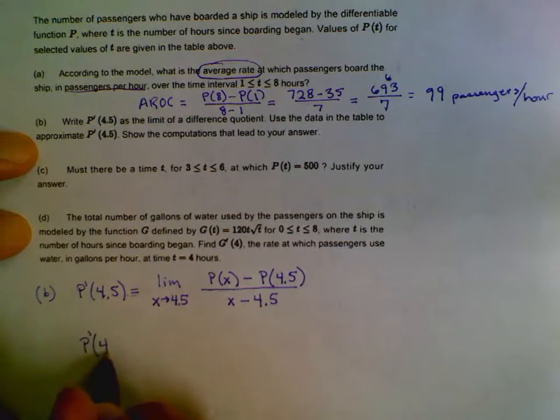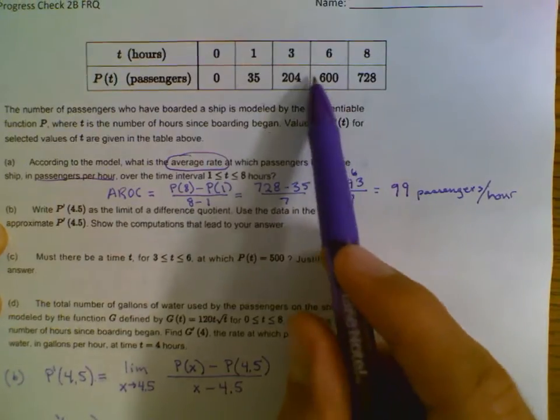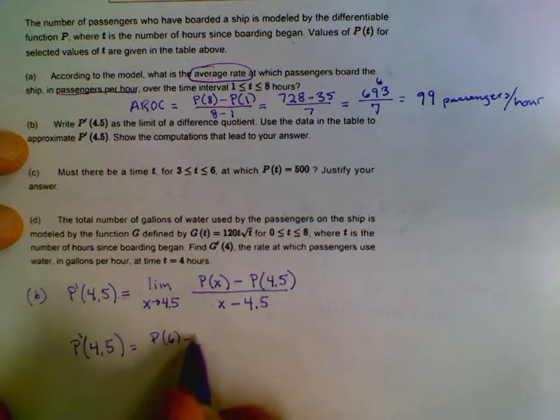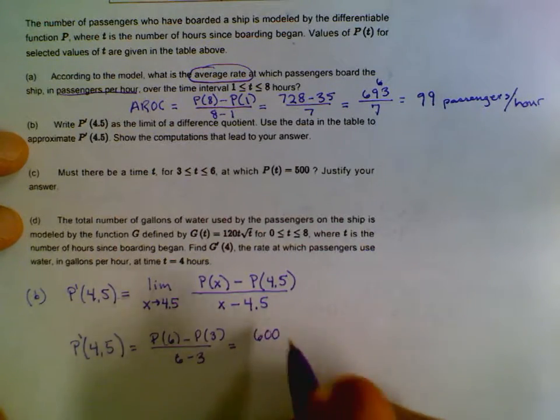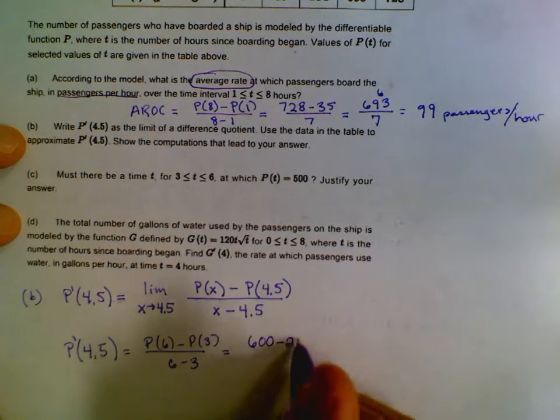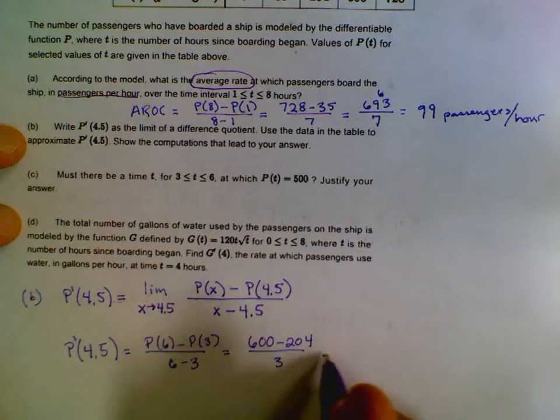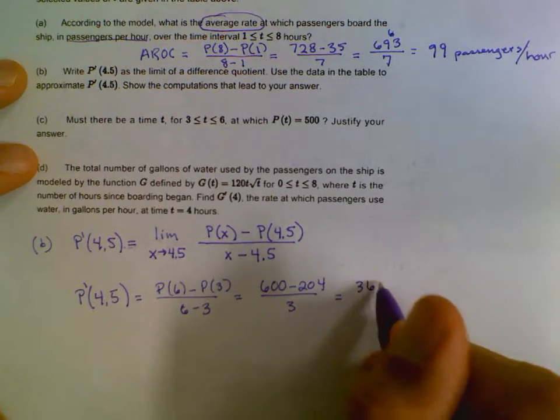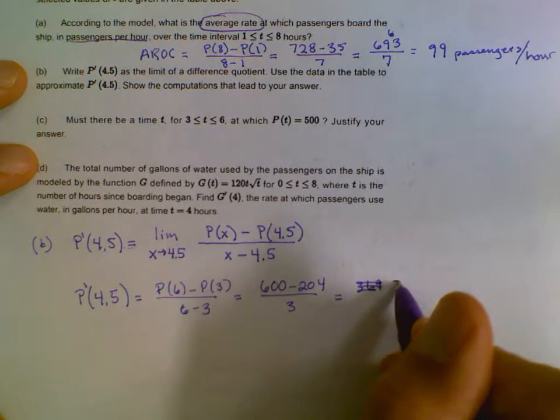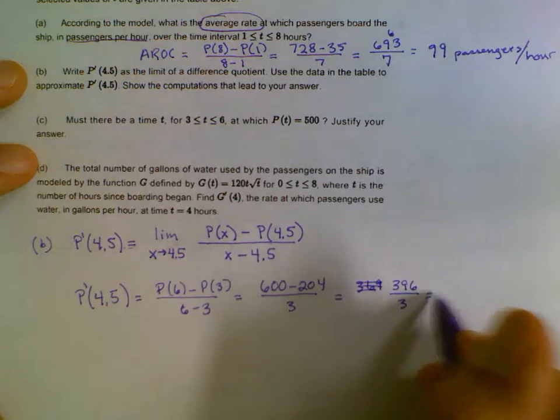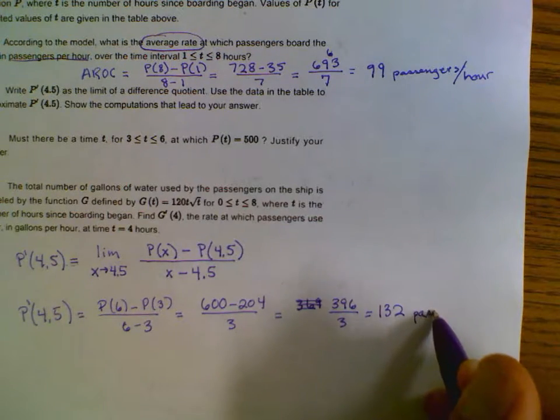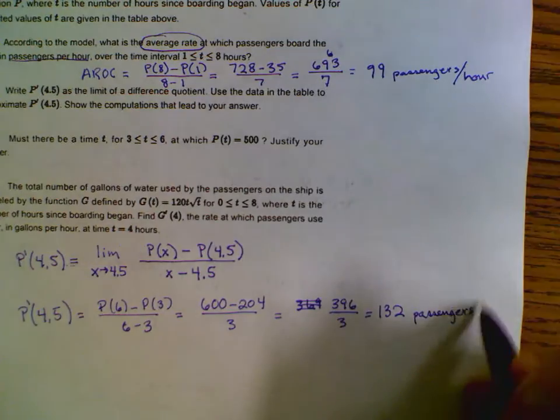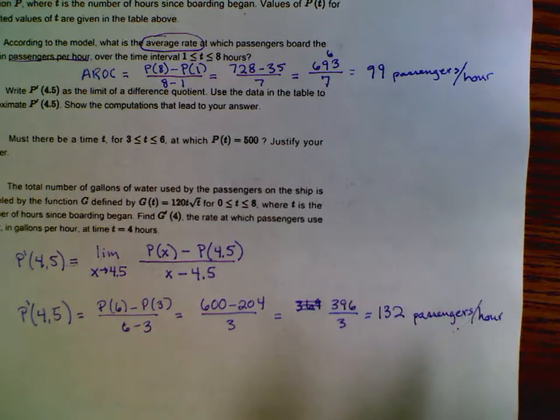Now we're going to use the data to approximate P prime of 4.5. Well, P prime at 4.5 would be the average rate of change between 3 and 6. So it'll be P of 6 minus P of 3 all over 6 minus 3. P of 6 in our table is 600, and P of 3 in our table is 204. 600 minus 200 is 400. So this is 396 over 3, which is 132. 132 passengers per hour, right? Still the same units as the average rate of change.